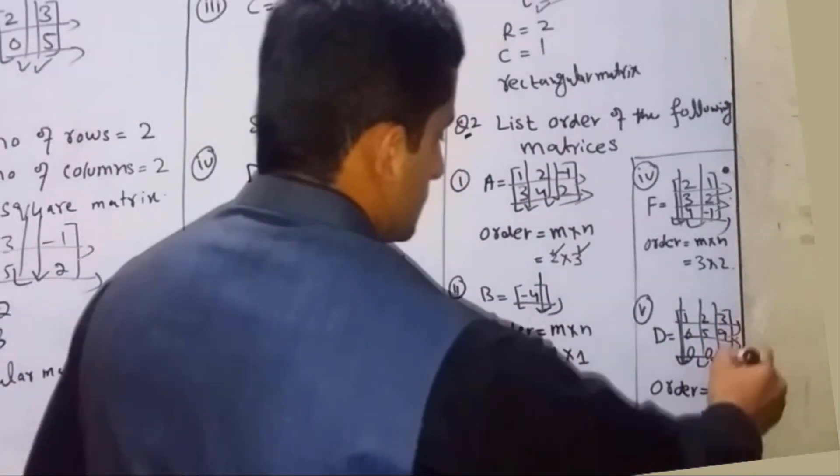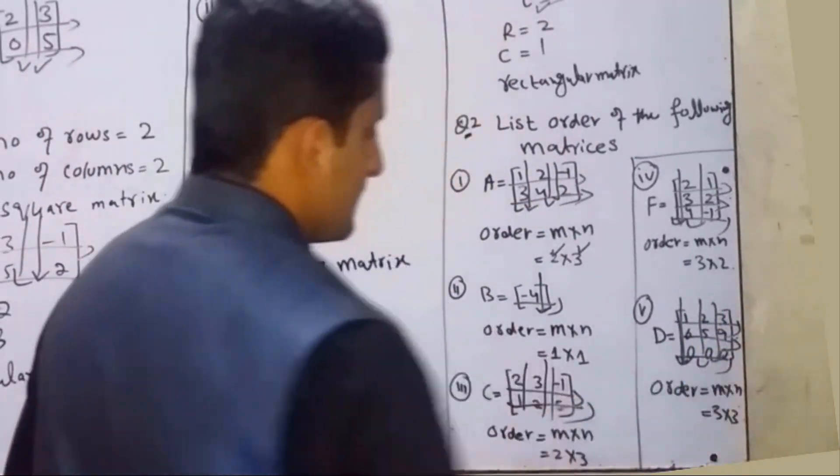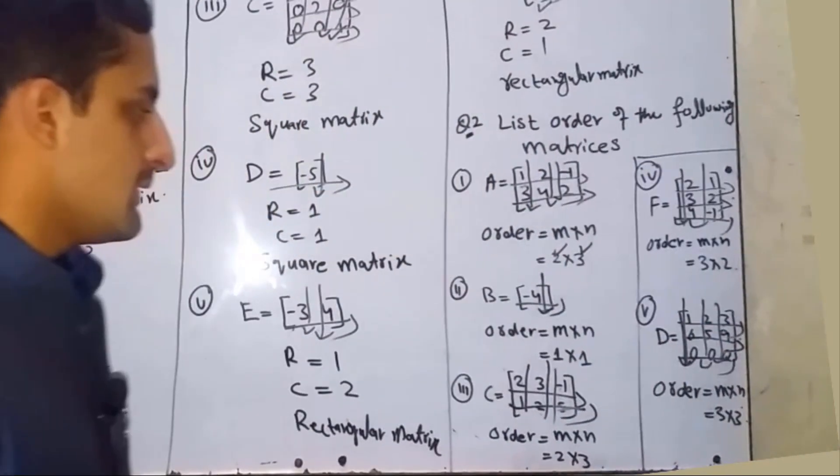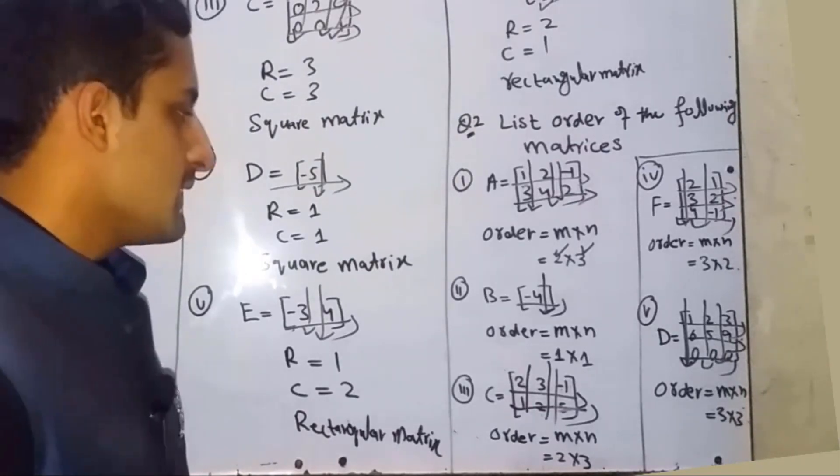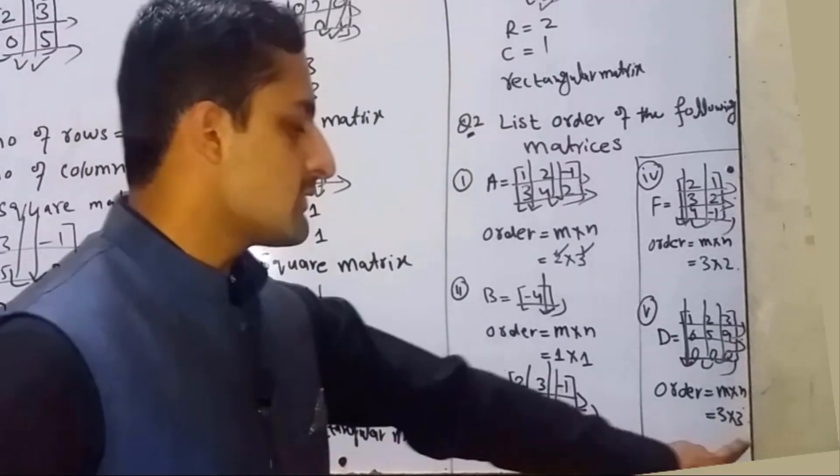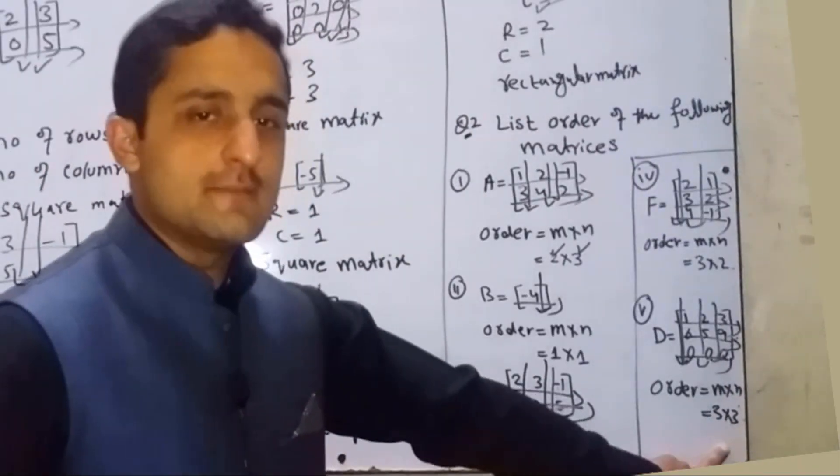For the last part, number of rows = 3 and number of columns = 3. So order equals 3×3.